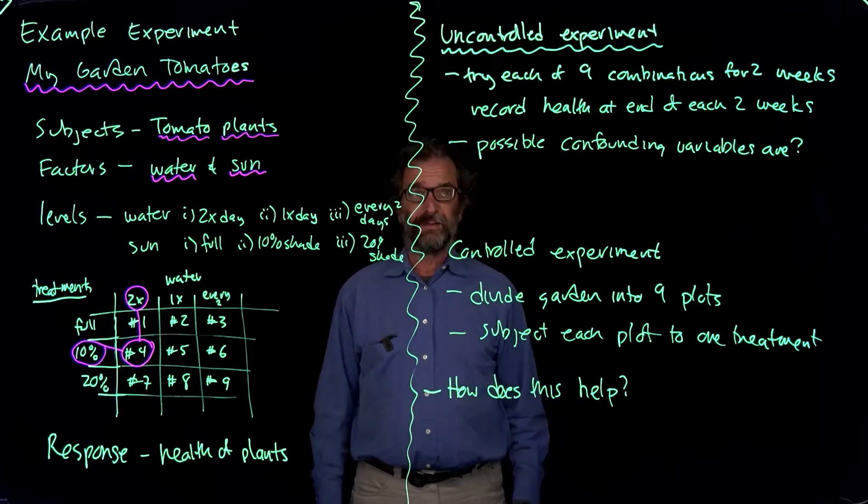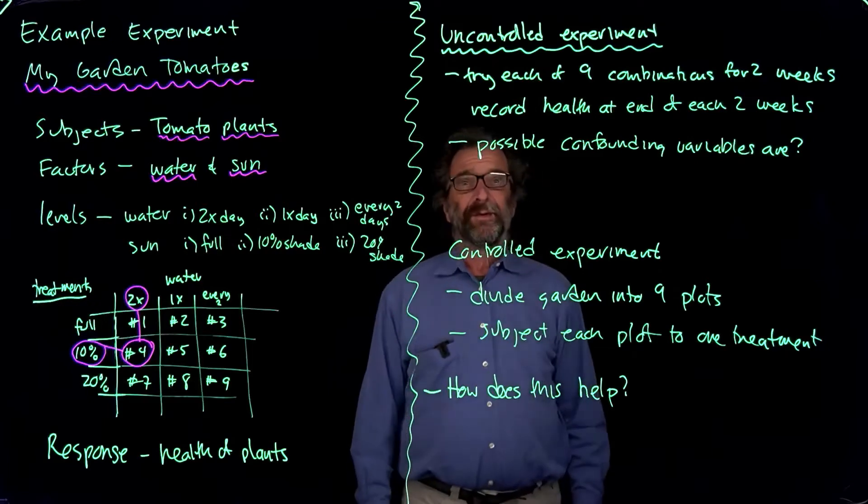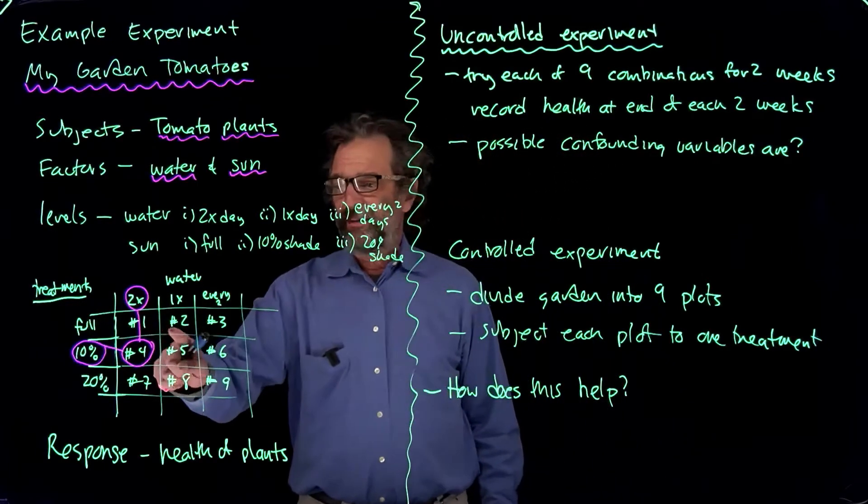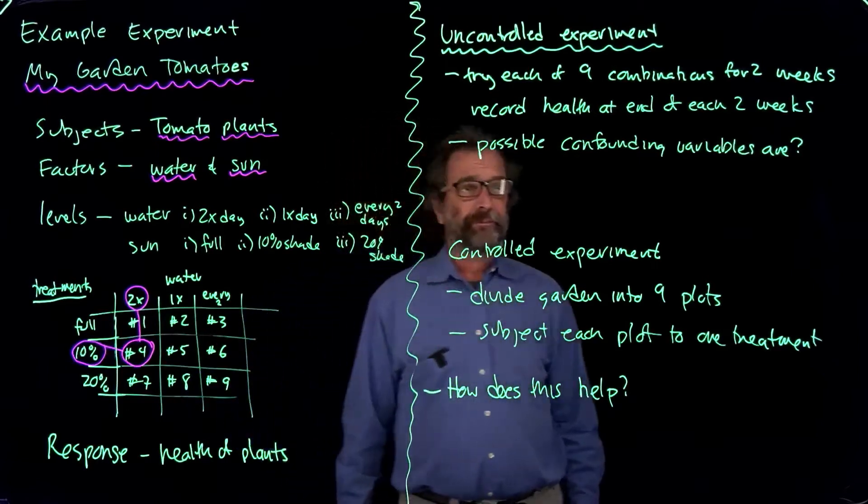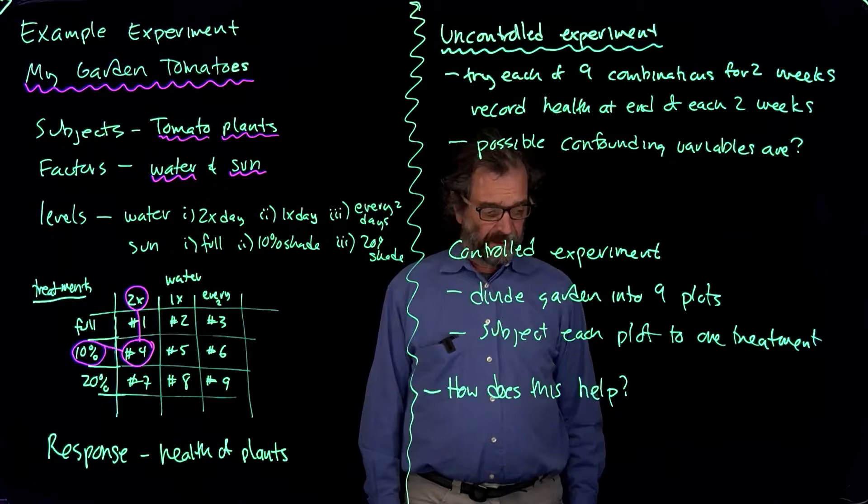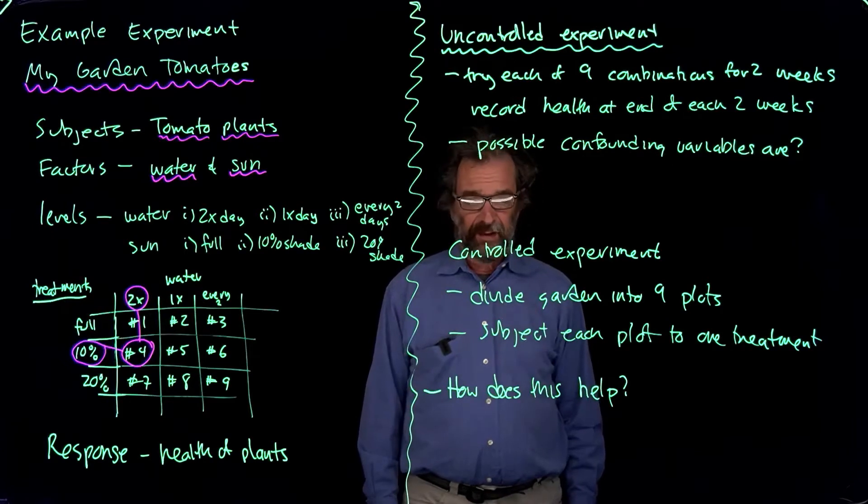So the way we do that is we try each of nine combinations of water and sun. Each of these combinations we'll try for a two-week period and record the health at the end of each two weeks.